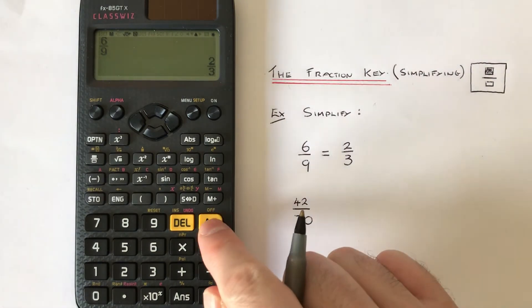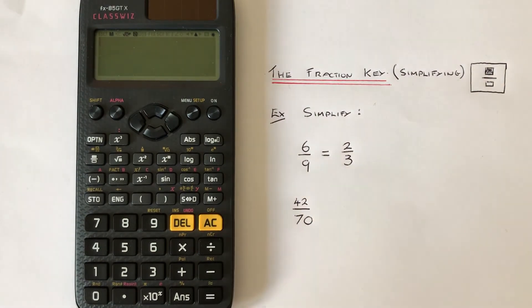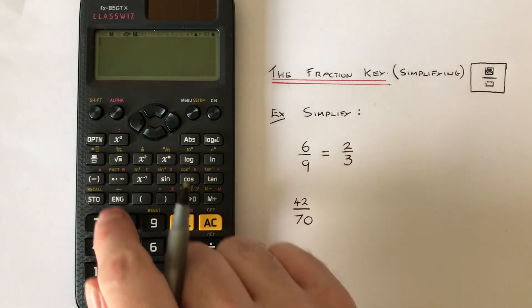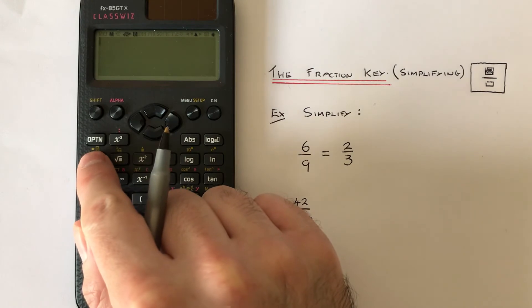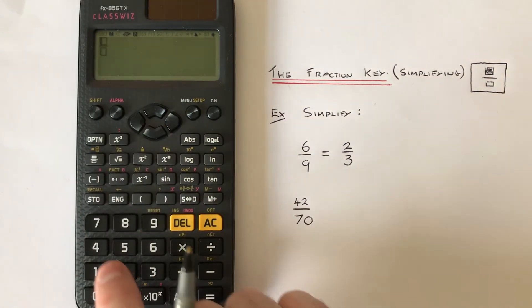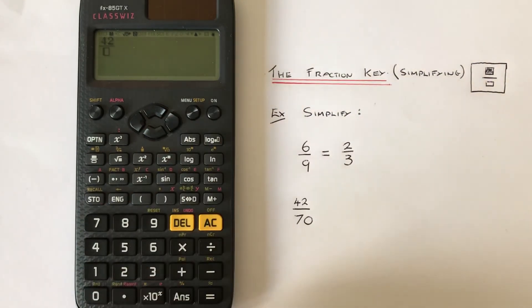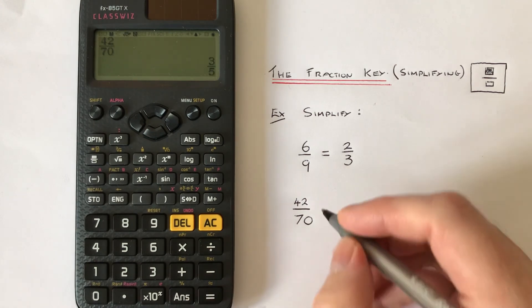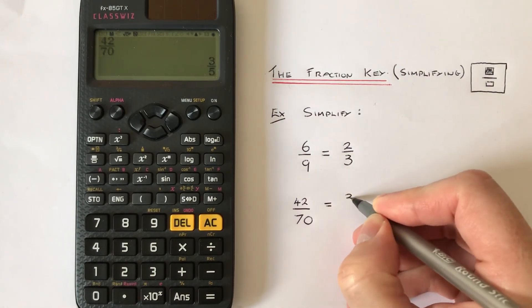Let's have a look at one more example. This time we've got 42/70 to simplify. Press the fraction button, type in 42, hit the right cursor, then type in 70 and then press equals. We get the answer 3/5.